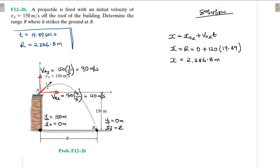This is the distance that this particular object travels to reach point B — from point A to B, it covers 2,386.8 meters. I guess we are done. Thank you for listening — see you in my next screencast.